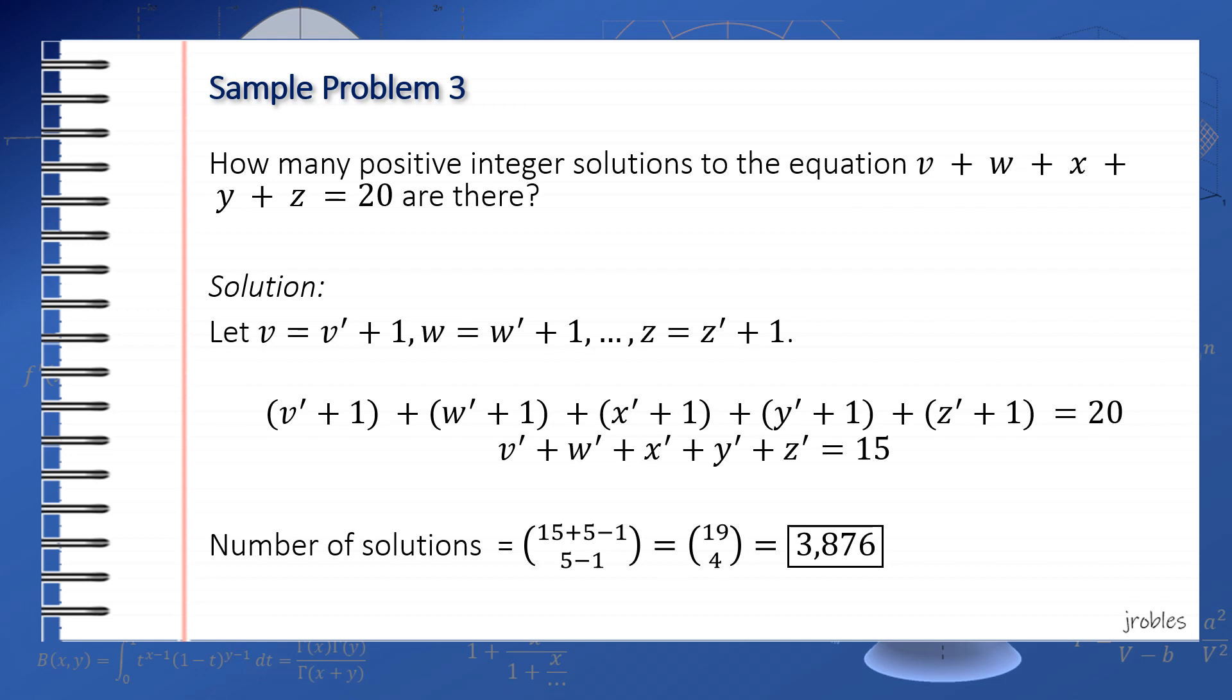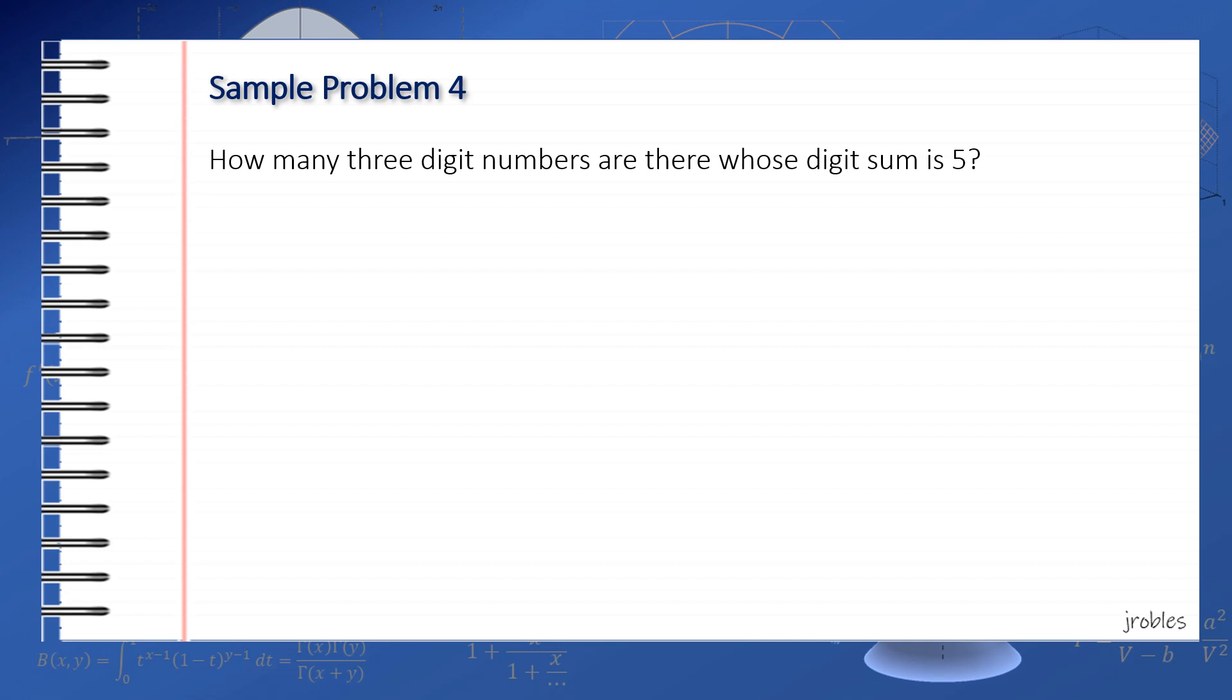Lastly, for our last sample problem, how many three-digit numbers are there whose digit sum is 5? Let's denote the number as xyz, where x is the hundreds digit, y is the tens digit, and z is the units digit.